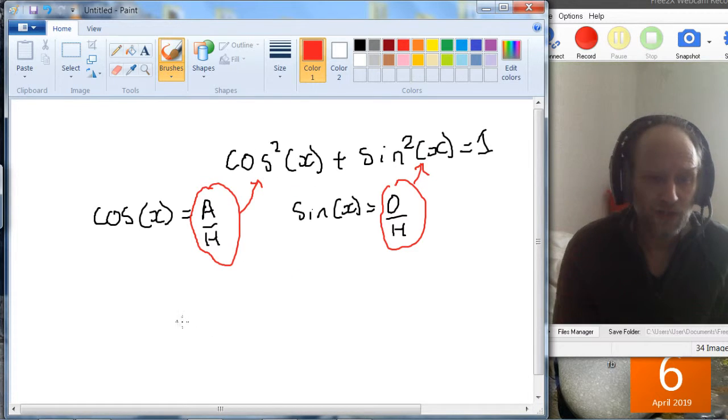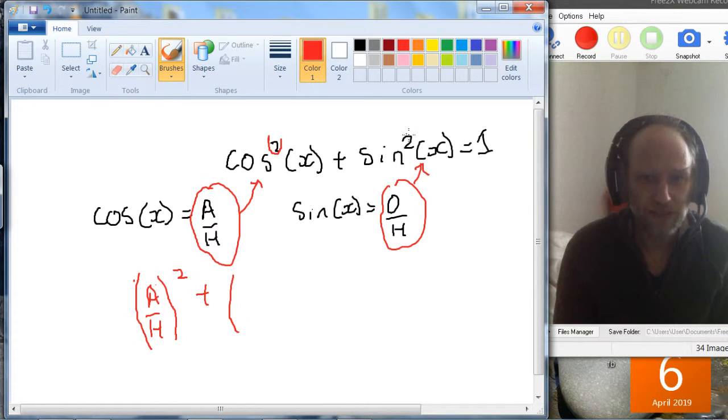So if we do that, what do we get? We get a over h and it's squared, so we're going to have to square that, squared plus o over h and again that squared is equal to 1.